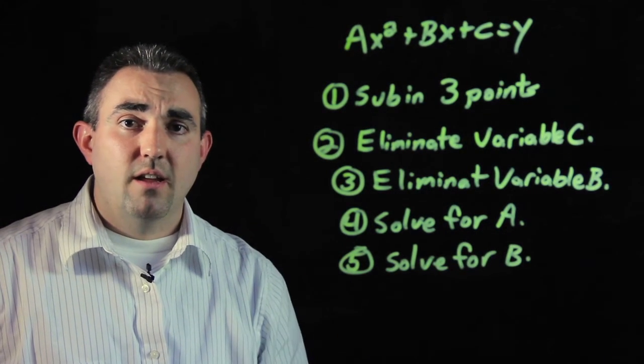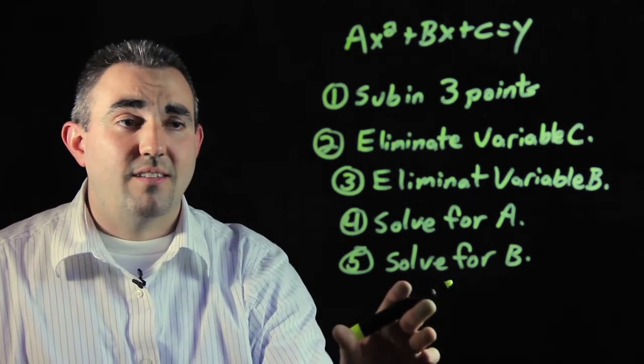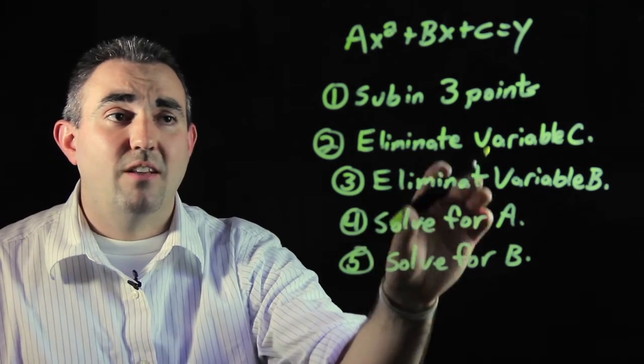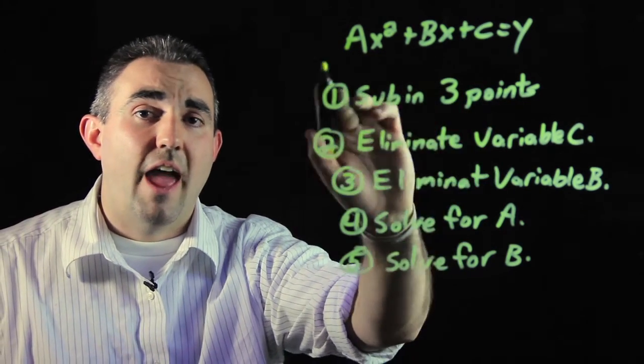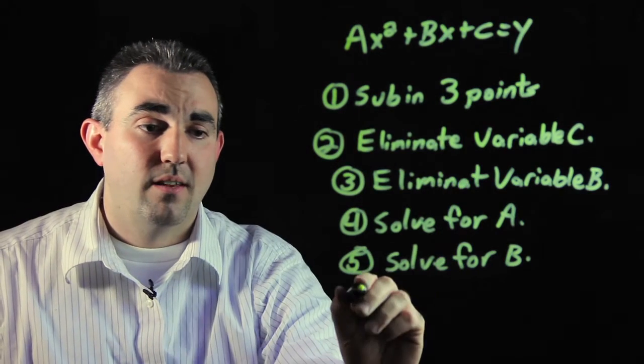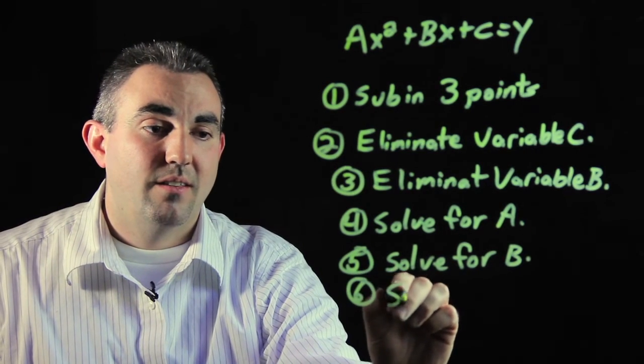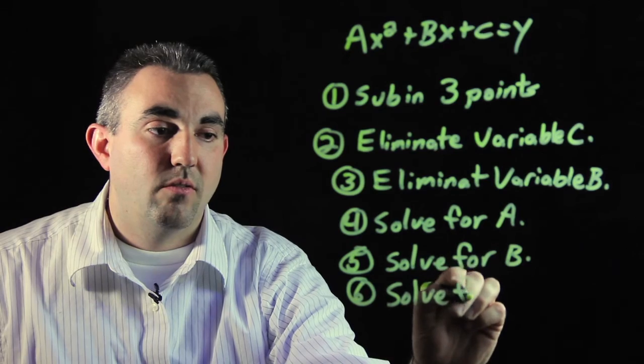Now you have a and b. What you're going to do with a and b is take it and sub it back into one of the original equations that you got after you subbed in your three points. So step six, solve for c.